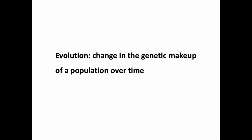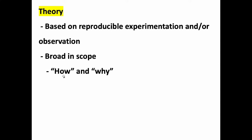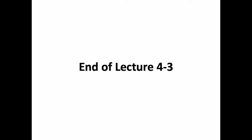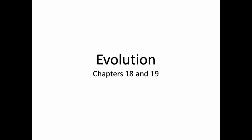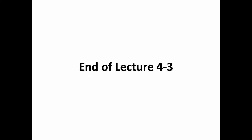So this is our definition of what evolution is: change in the genetic makeup of a population over time. But how and why do these changes happen? If the theory of evolution is a theory, it should explain these things, and there should be a ton of support for it. We will talk about how these changes happen, why they happen, and the overwhelming support we have for this — starting in the next recorded lecture. I just briefly wanted to start on evolution here to define these terms and get us ready. We will really get into these chapters in the next one. This is the end of recorded lecture 4.3.